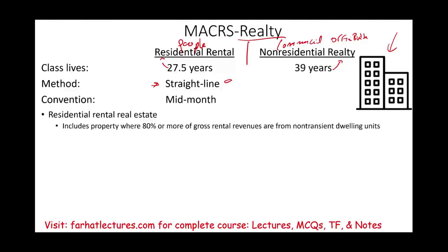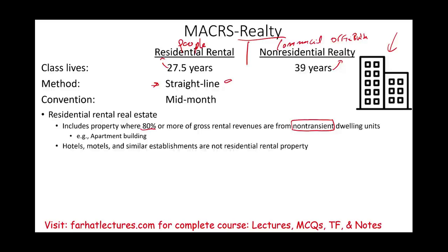Residential real estate includes property where 80% of the gross rental income are from non-transient dwelling — meaning people don't move around, which is rental property where people live. That's what we talk about with apartment buildings. However, hotels, motels, and similar establishments are not residential rental property.